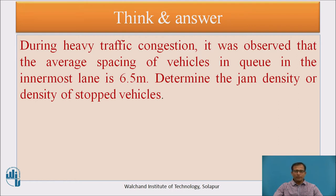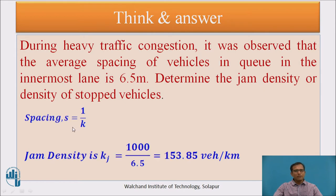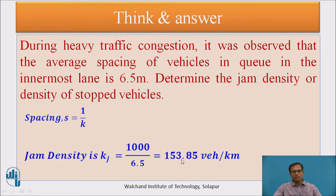Example: During heavy congestion, it is observed that the average spacing of vehicles in a queue is 6.5 meters. Calculate the jam density (density for stopped vehicles). Using S = 1/K, and since density is calculated per kilometer (1000 meters), K = 1000 / 6.5 = 153.85 vehicles per kilometer. This is the jam density for this question.